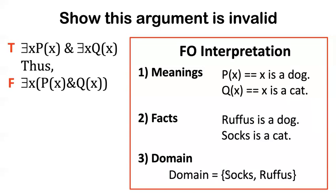And also I'll tell you my domain of quantification just includes Socks and Rufus, these two animals and nothing else. So I've specified rigorously all three of these things which we need in order to know that the premise is true and the conclusion false. That means the argument is invalid.